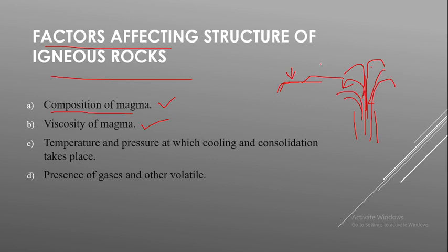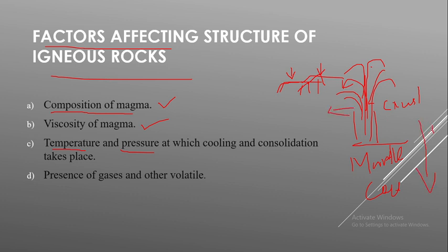Viscosity of magma is very important — if it is highly viscous, it forms a particular type of rock; if not very viscous, it flows and forms another group of rocks. The third factor is temperature and pressure. In the Earth's mantle and core region, temperature and pressure are very high. As we go deeper, both temperature and pressure increase. When hot material comes outside from the Earth, it cools and consolidates, and temperature and pressure play a major role in affecting the structure of various crystals.